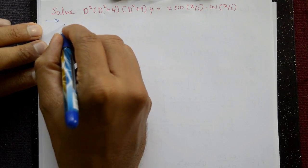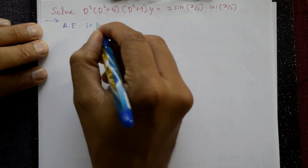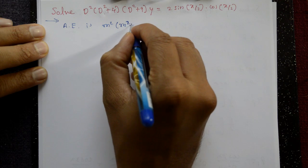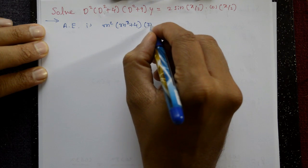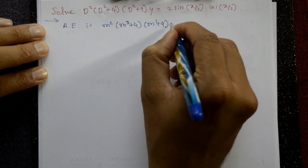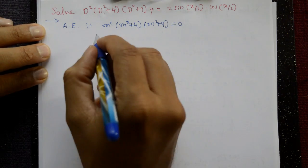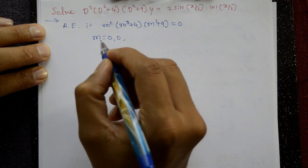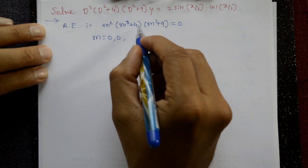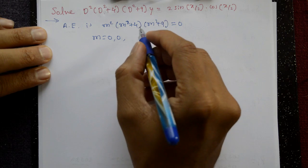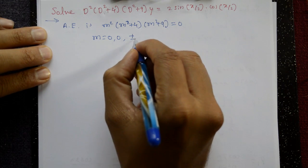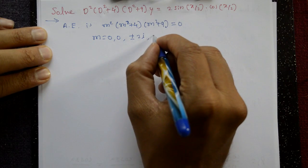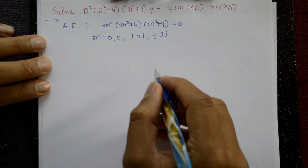Solution: First, find the auxiliary equation: m-squared into m-squared plus 4 into m-squared plus 9 equal to 0. The roots are: m-squared equal to 0, so m equal to 0, 0 (first two roots). From m-squared plus 4 equal to 0, m-squared equal to minus 4, so m equal to plus or minus 2i. From m-squared plus 9 equal to 0, m equal to plus or minus 3i.